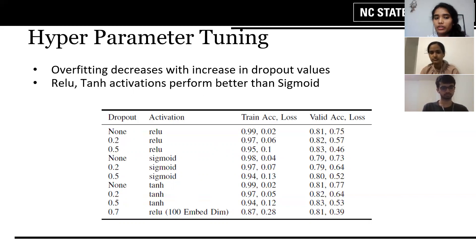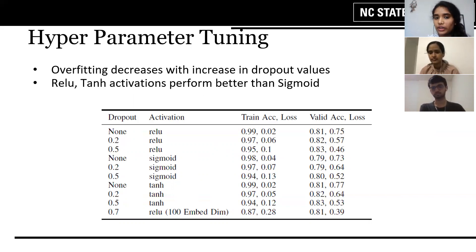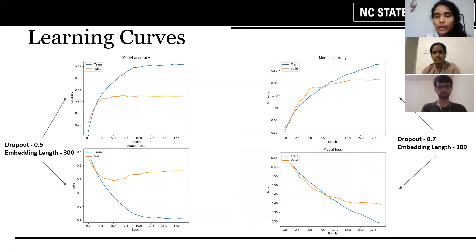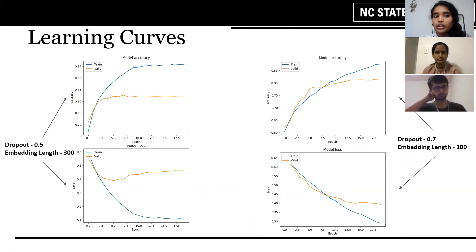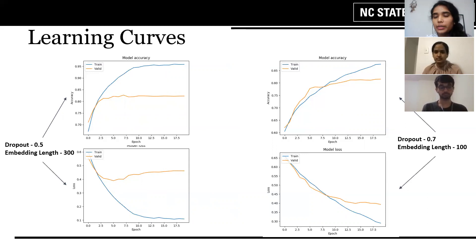Out of all the models, ReLU with a dropout of 0.5 seemed to perform best, with a training accuracy of 95% and validation accuracy of 83%. Still, there was a 12% difference, so we further increased the dropout to 0.7 and reduced the embedding dimension to 100. With that, training accuracy went down to 87% but validation accuracy remained at 81%, giving only a 6% difference to avoid overfitting. The learning curves on the slide confirm this — the right-side graphs for 0.7 dropout and 100-dimension embedding show the validation and training accuracy curves much closer together than those on the left.